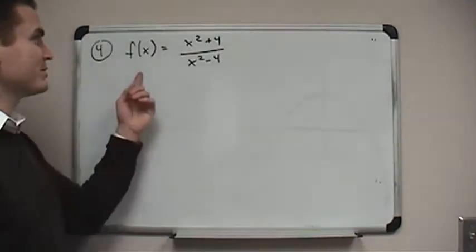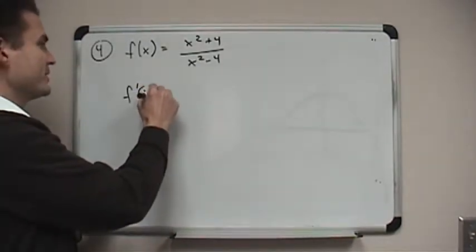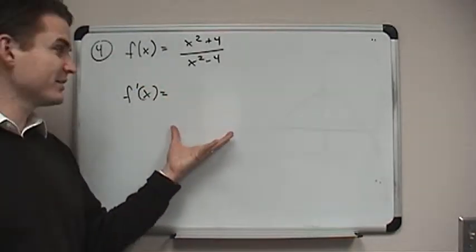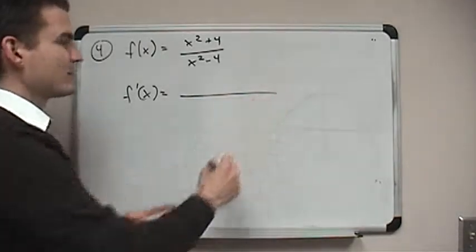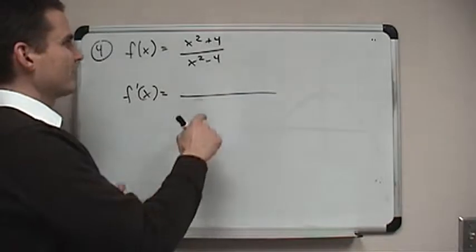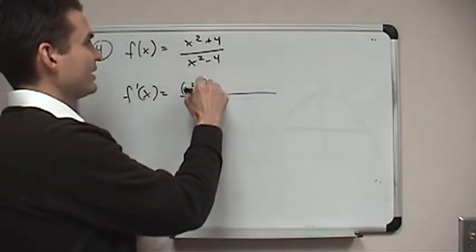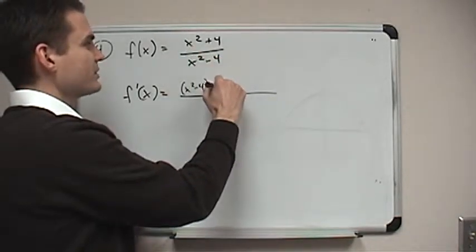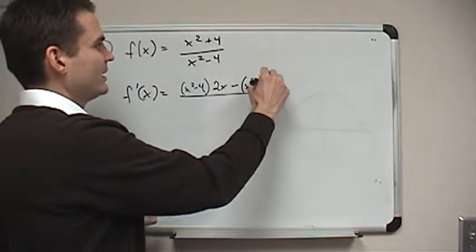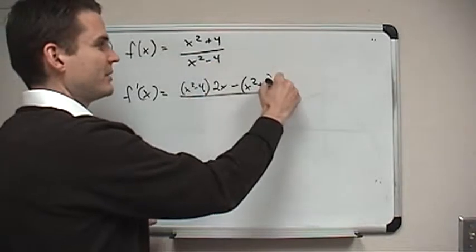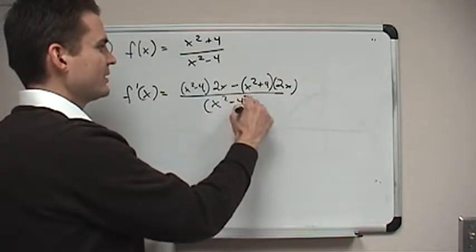The first thing we have to do is compute the second derivative of this function. There's no easy way to do that — we just have to get the first derivative and then take the derivative of the first derivative. For this one, we're going to use the quotient rule. Remember, the quotient rule says take the denominator times the derivative of the numerator, which is 2x, minus the numerator times the derivative of the denominator, which is also 2x.